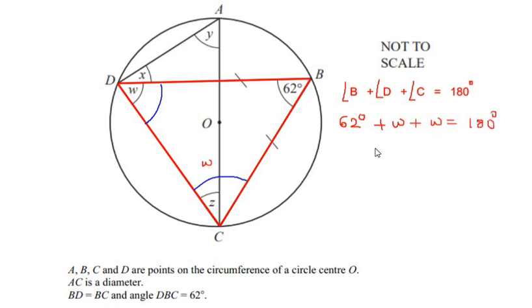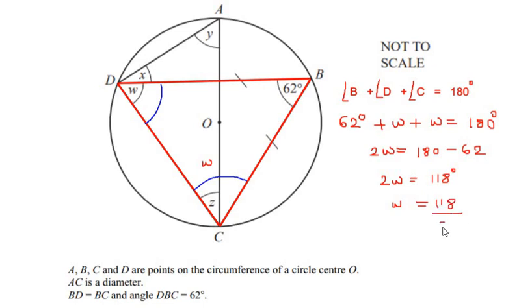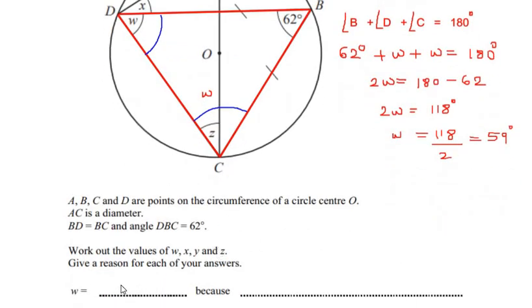Combining like terms: 2W = 180 − 62 = 118, so W = 59 degrees. The reason for angle W is that it is a base angle of isosceles triangle BDC. We record: angle W = 59 degrees, because angles in an isosceles triangle BDC are equal.